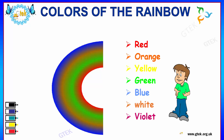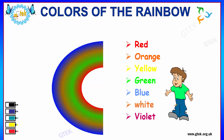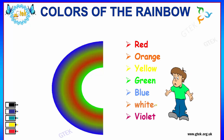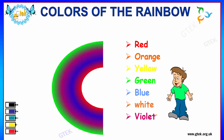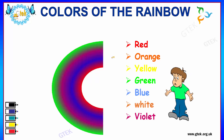Let us discuss about the colors of the rainbow. Red, Orange, Yellow, Green, Blue, White and Violet are considered to be the seven colors of the rainbow. You can see the color combination over here of how the rainbow colors will be.